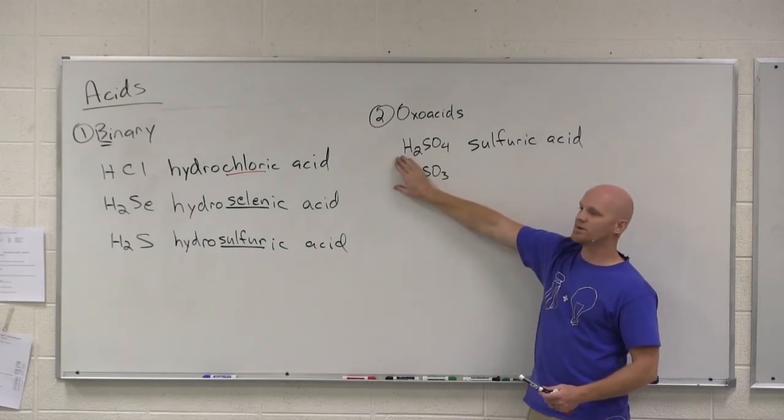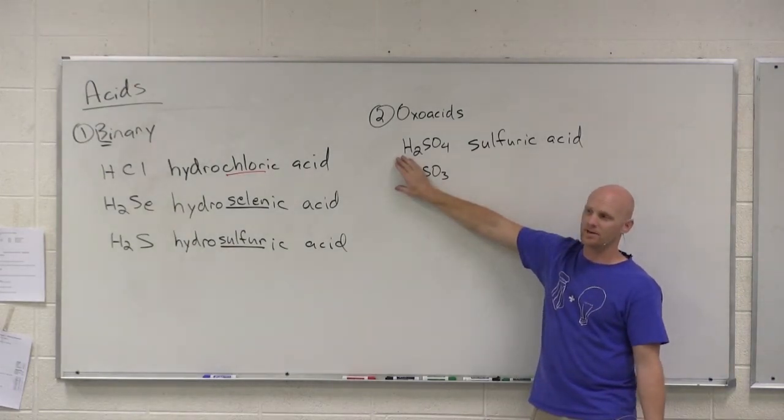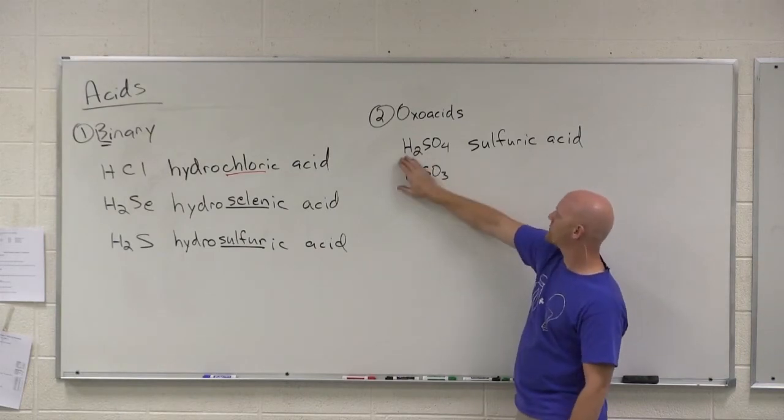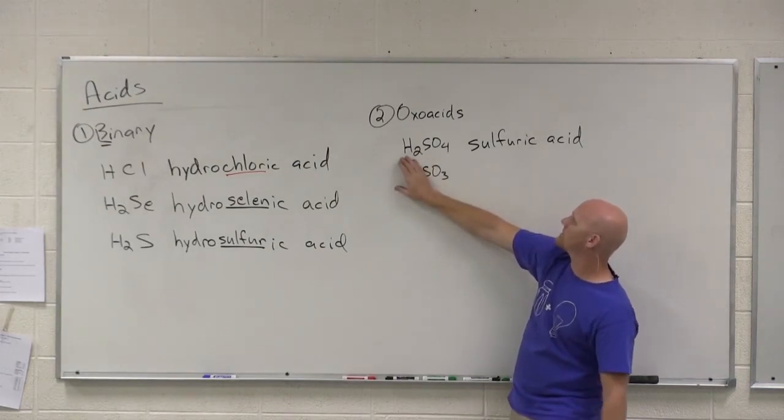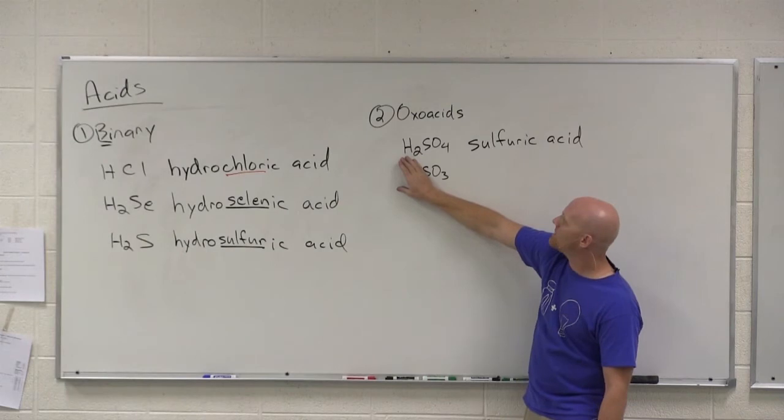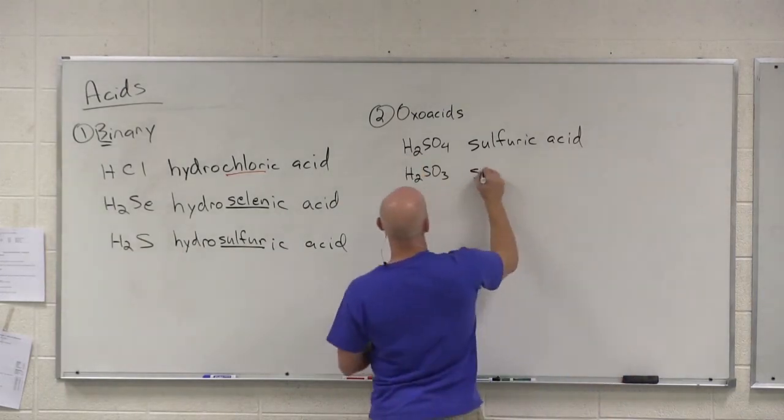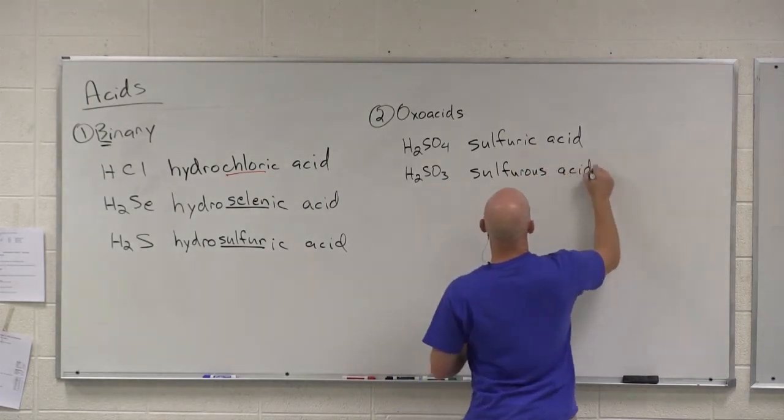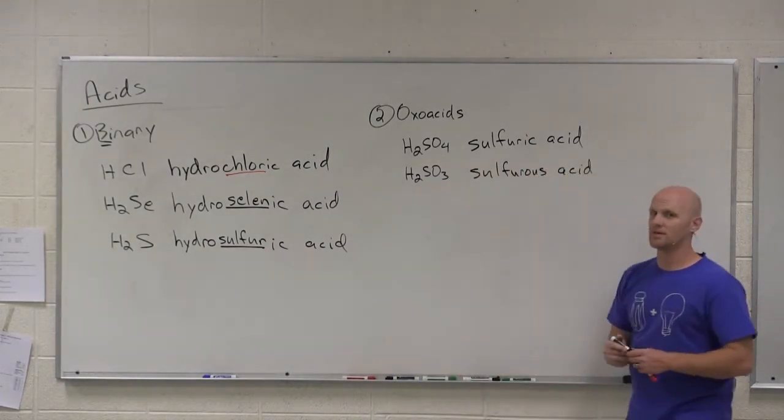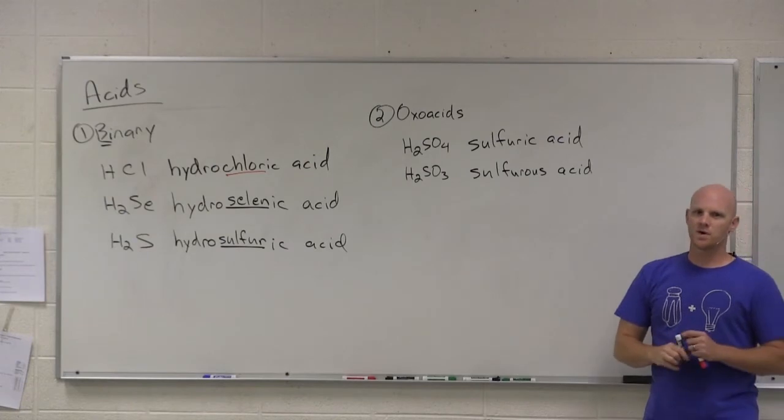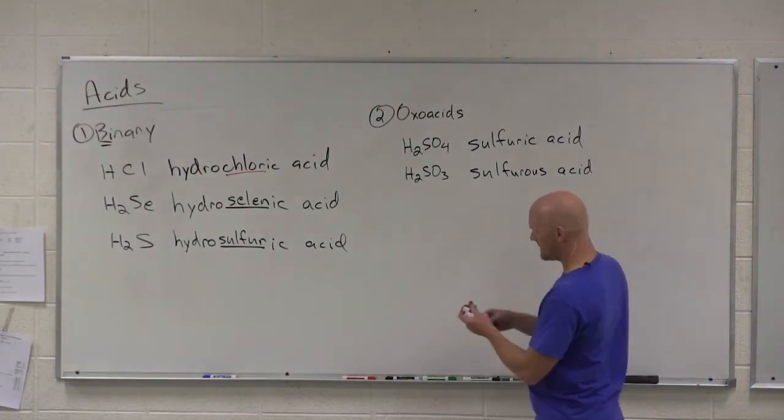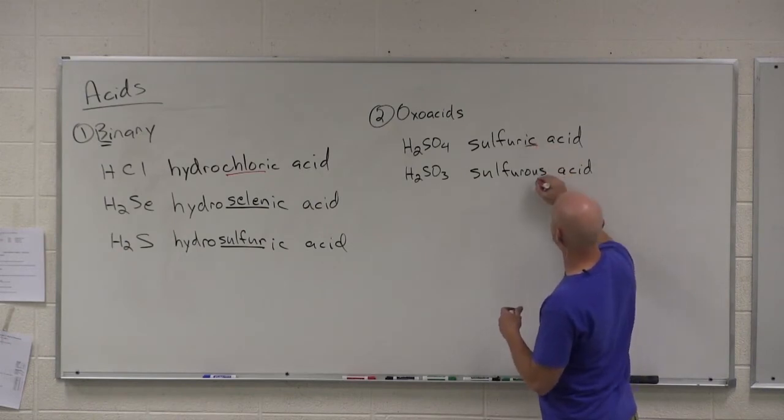Correspondingly then, SO3 2- minus is what polyatomic ion? Sulfite. SO4 2- minus sulfate, SO3 2- minus sulfite. And when you're naming it as a corresponding oxoacid, -ite becomes -ous, O-U-S. And so this is sulfurous acid. So naming these oxoacids means you've probably already memorized your polyatomic ions, which will help you significantly. So -ate becomes -ic, -ite becomes -ous.